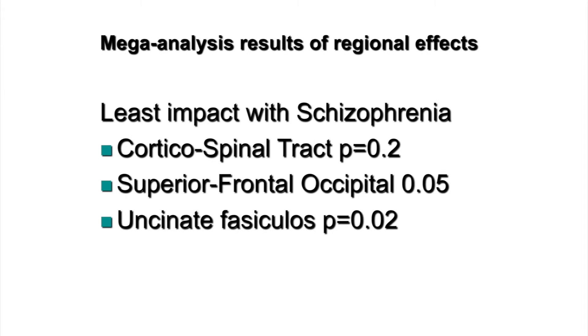On the other hand, areas that show at least impact in schizophrenia are the corticospinal tract, which shows no effect. This is supposed to be superior frontal occipital rather than inferior frontal occipital. And uncinate fasciculus, which kind of shows very little effect.